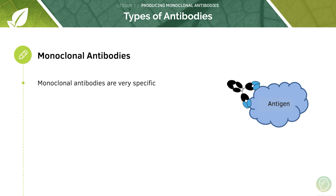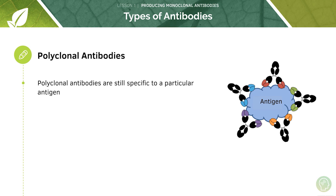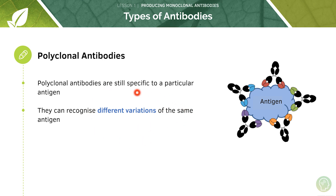These antibodies can be either mono or polyclonal. Monoclonal antibodies can only bind to a particular antigen structure, so they can only target very specific chemicals or cells. In contrast, polyclonal antibodies are still specific to a particular antigen, but they can recognise different variations of the same antigen. This is the key difference between mono and polyclonal antibodies, and therefore you can see multiple binding sites for the same antibody.